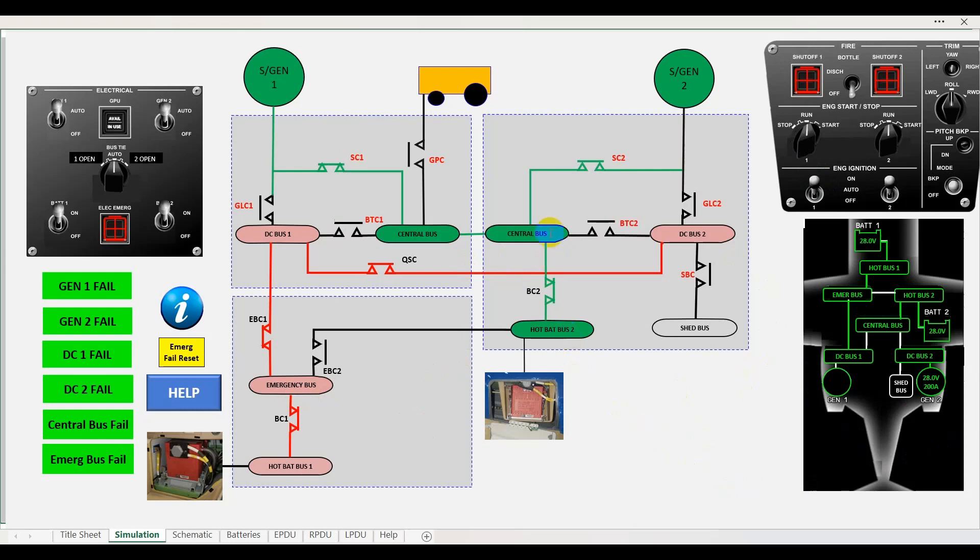I've highlighted that the buses change colors so you can see which ones are supplying which system. Once the engine is up and running, the line contactor will close, bus tie 1 will open, effectively splitting the electrical system into two halves.